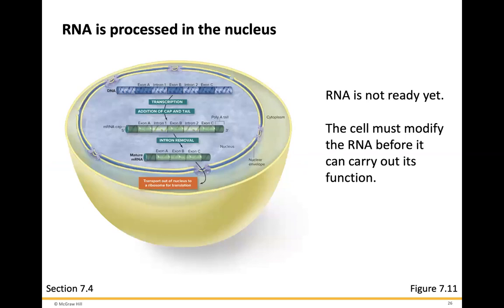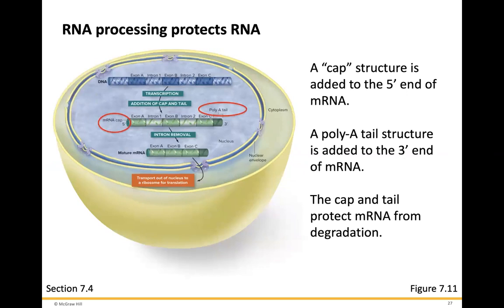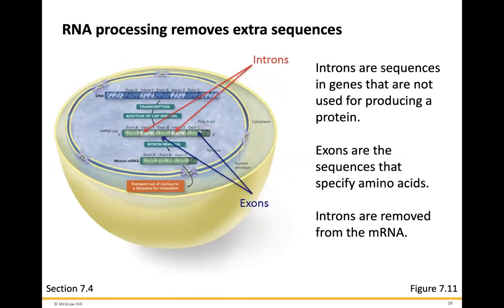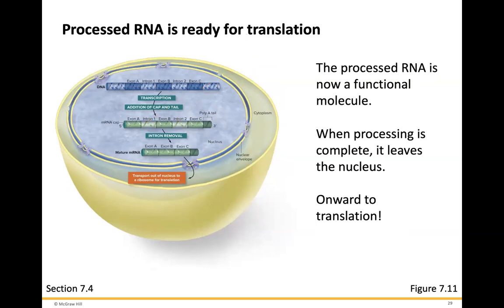The RNA is not ready yet. The cell must modify the RNA before it can carry out its functions. A cap structure is added to the 5' end of the messenger RNA — this is referred to as the messenger RNA cap. At the 3' end, a poly-A tail is added, which is the addition of several A nucleotide bases. The cap and tail protect the messenger RNA from being degraded. Introns — sequences not used for producing protein — are removed; exons are the sequences that are kept. The processed RNA is now a functional molecule that leaves the nucleus for translation.